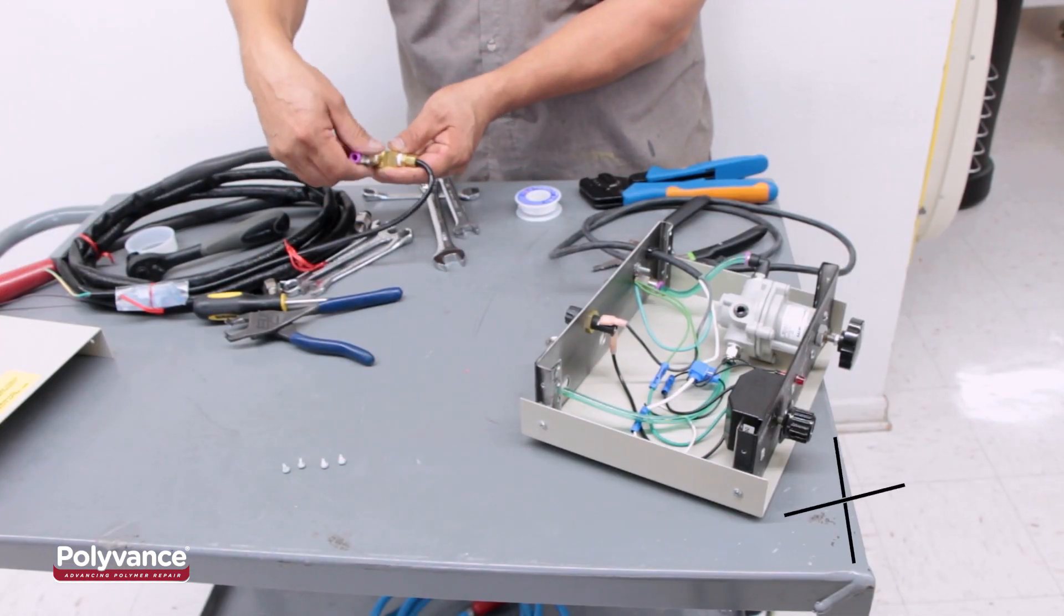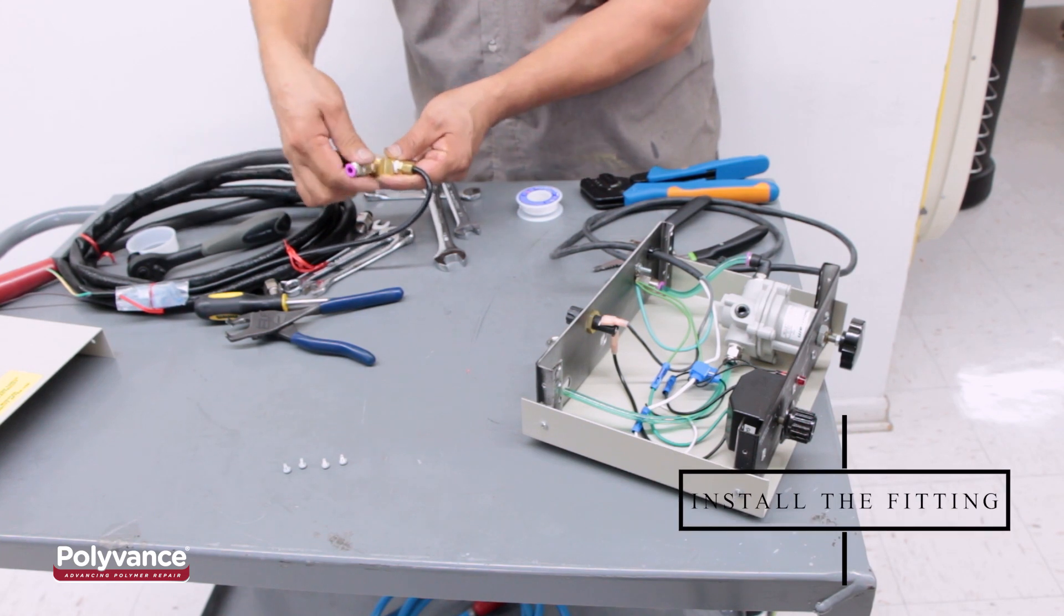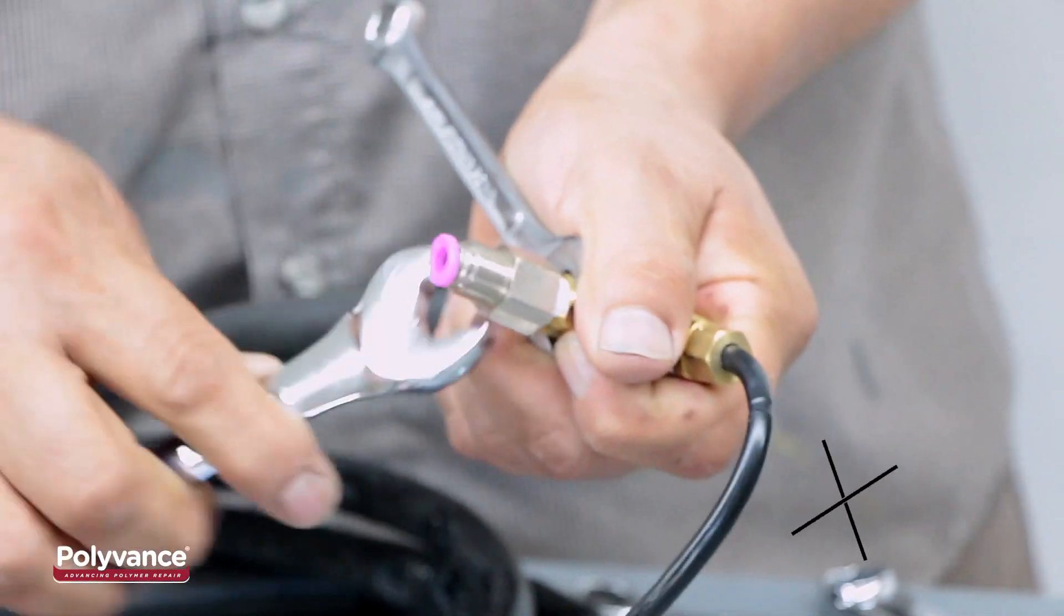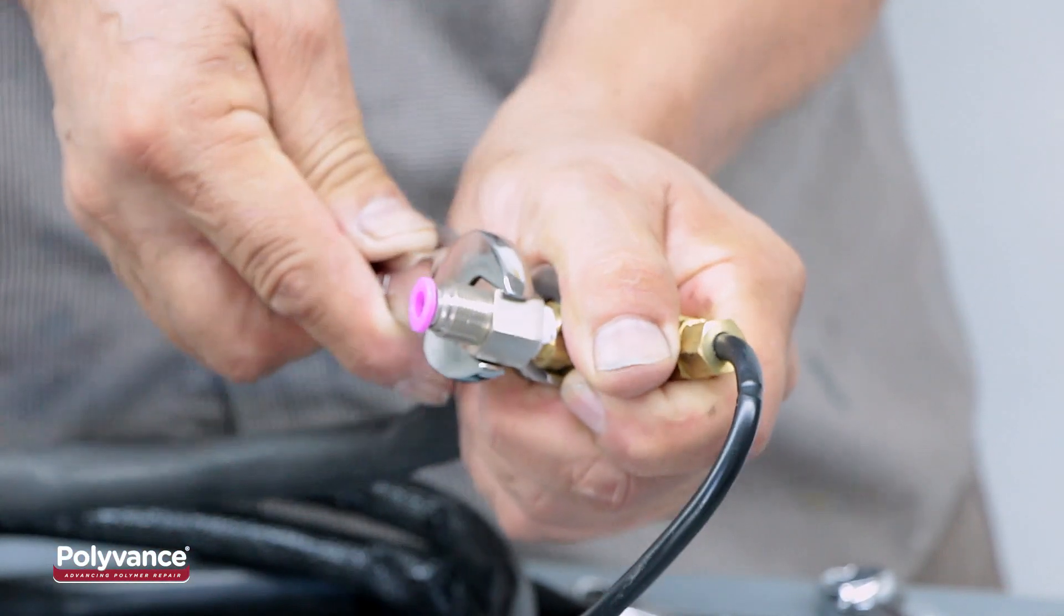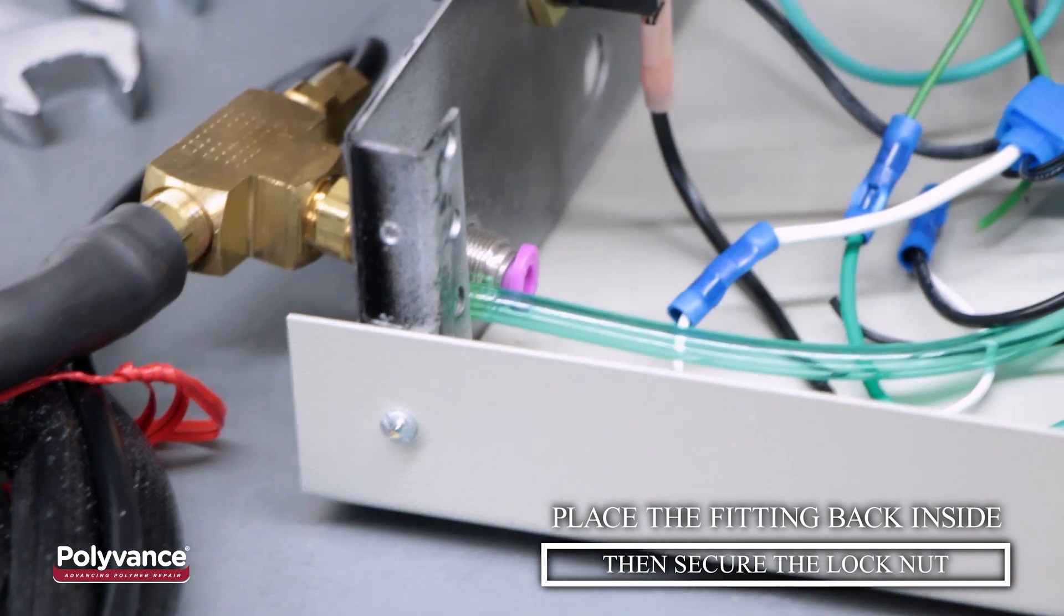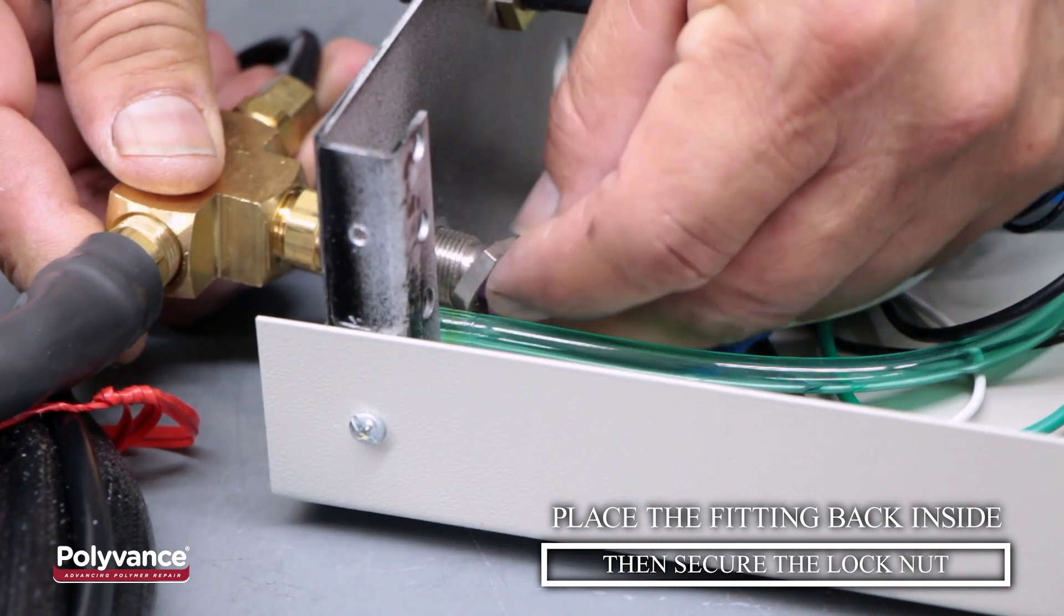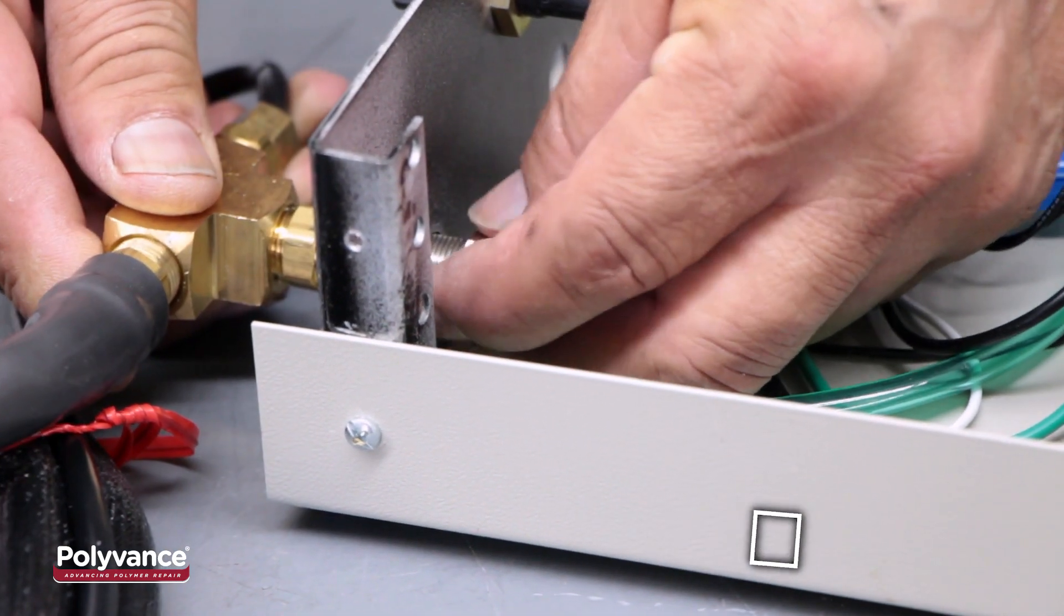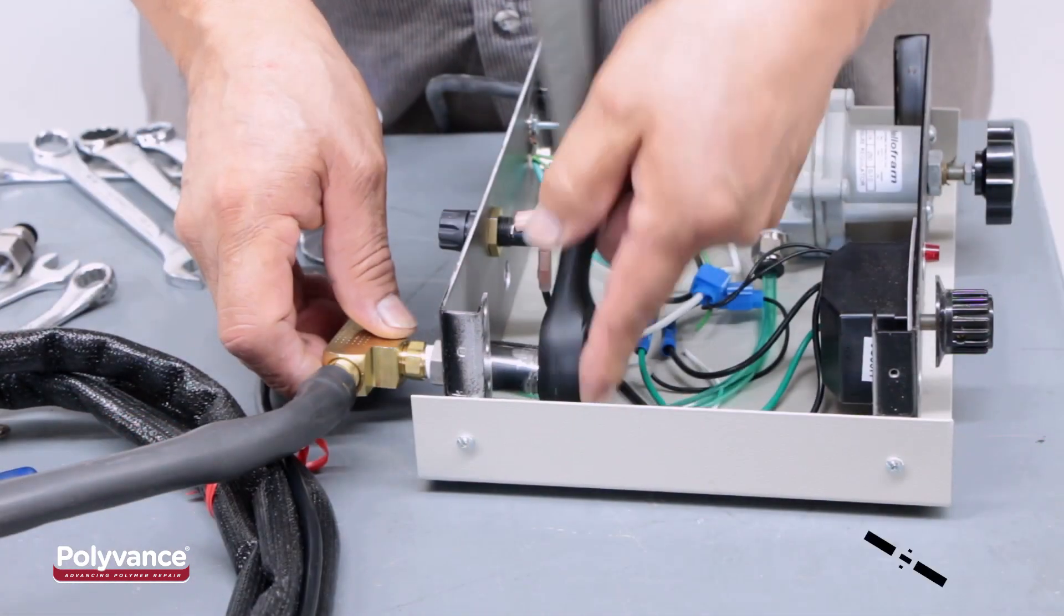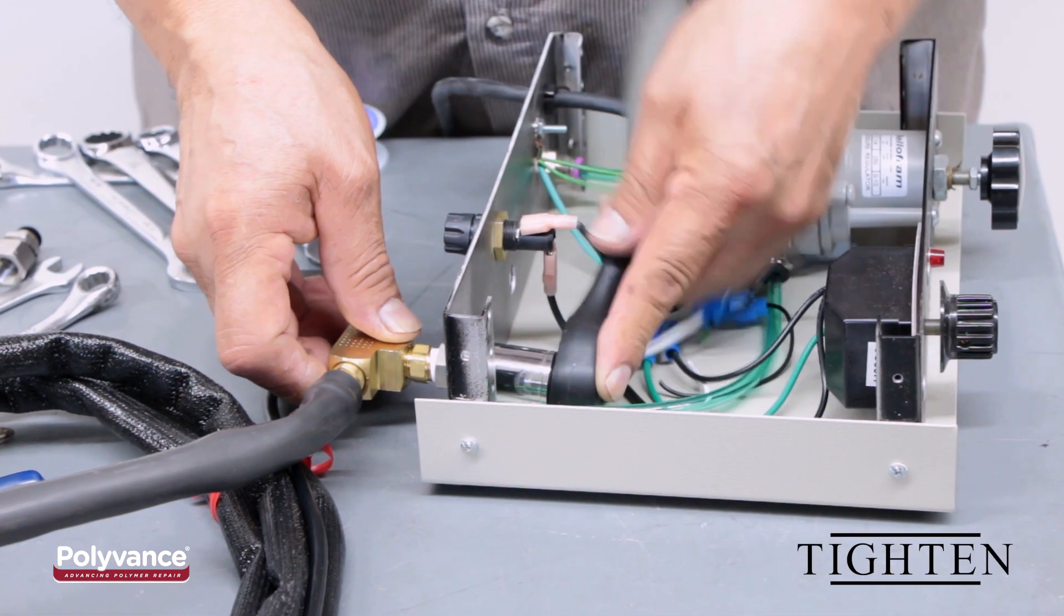Install the fitting on the new hose and wiring assembly using 9-16-inch and 11-16-inch wrenches. Place the fitting back inside, securing the lock nut on the inside of the welder. Tighten with two 11-16-inch wrenches.